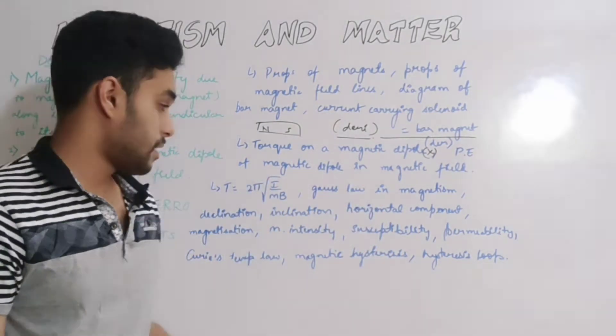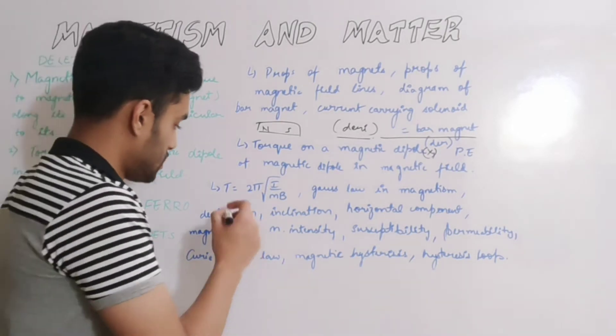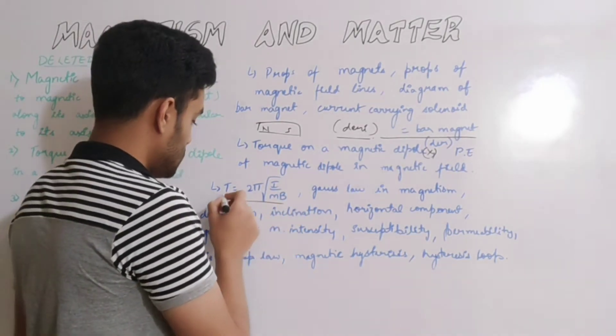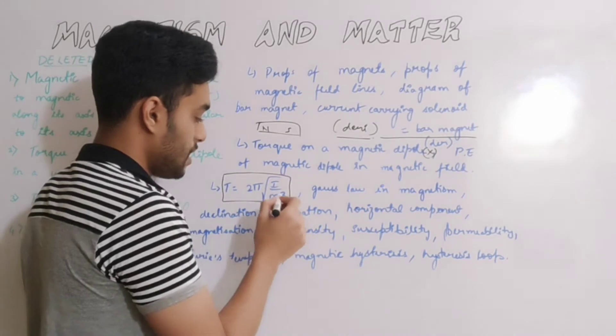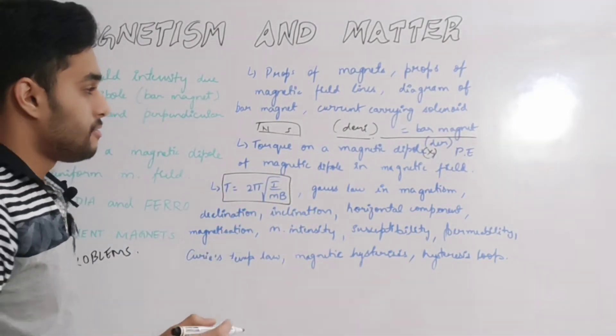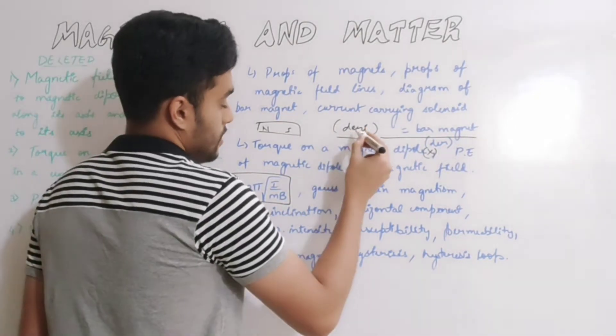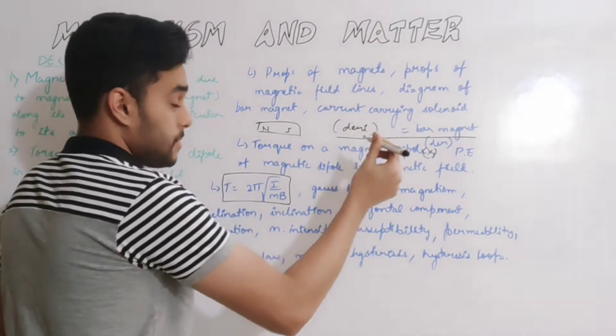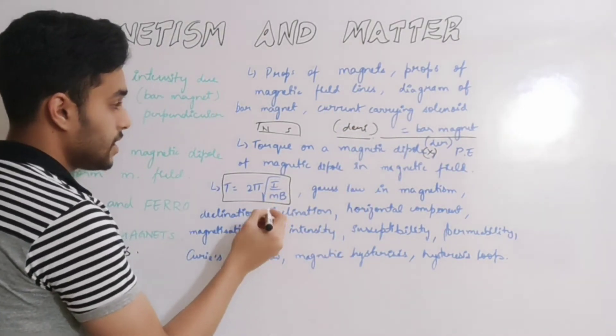Next thing is time period equals 2π root I by MB, this is one derivation. This is important for three marks. Five marks probability is less, this came in supplementary paper. In case it comes, three marks probability is slightly there, so prepare this with respect to three marks.